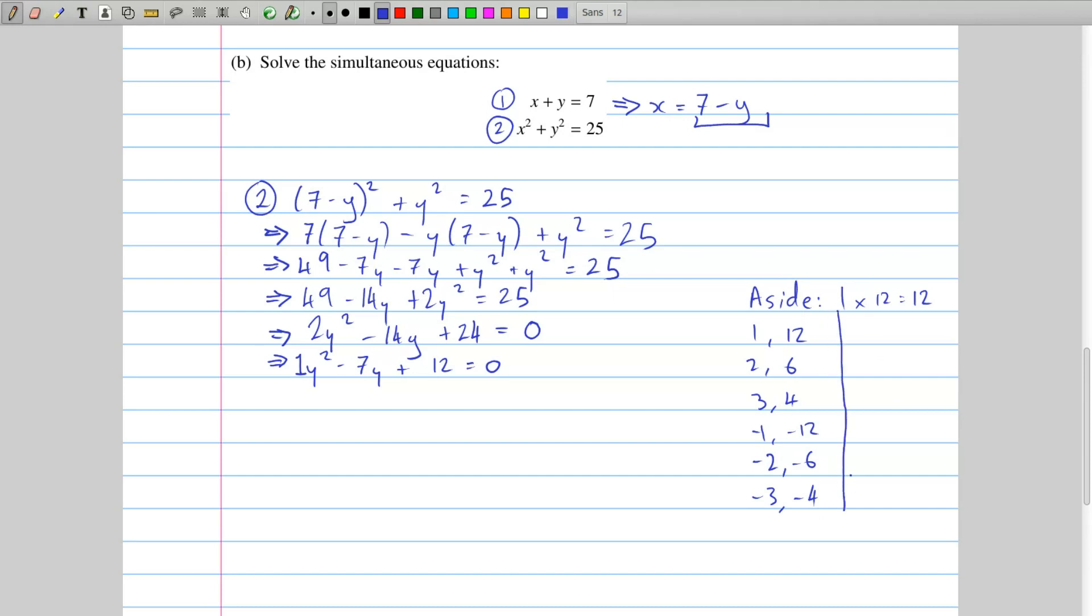And why do I do all this? Well, I really only want one of these pairs, and the pair that I want should add to the coefficient of y. So they should add to minus 7. So if I add each of these pairs together, I get 13 for the 1 and 12, 2 and 6 is 8, 3 and 4 is 7, minus 1 and minus 12 is minus 13, minus 2 and minus 6, minus 8, minus 3 and minus 4 gives me minus 7. So I was looking for a minus 7 there, and I end up with a minus 7 from the minus 3 and the minus 4. So that's the factor pair that I'm looking for.